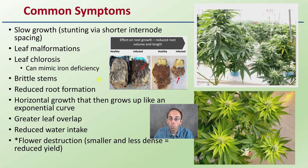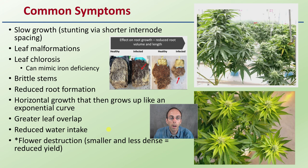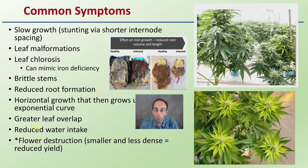Additional symptoms include brittle stems, reduced root formation — as we can see in the comparison between healthy and infected — horizontal growth that can grow up like an exponential curve, giving a distinctive U-shaped or parabola shape. Also greater leaf overlap, reduced water intake, flower destruction with smaller and less dense flowers, basically resulting in reduced yields in the end.